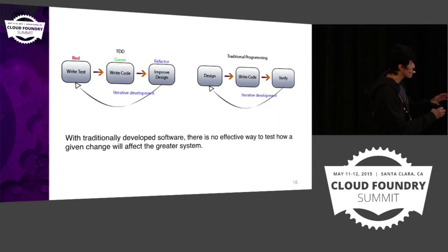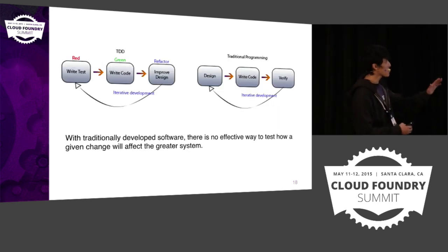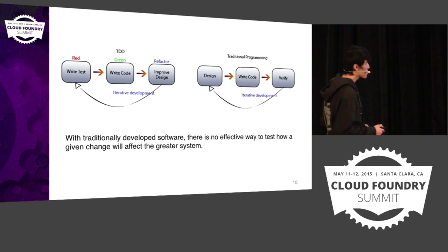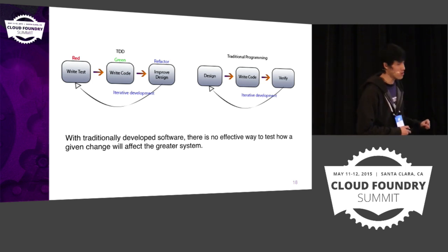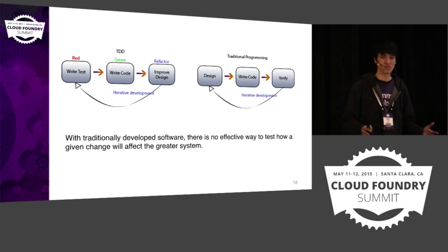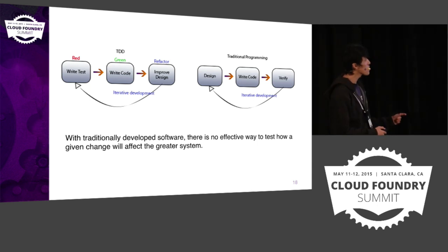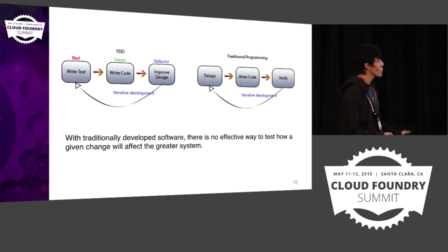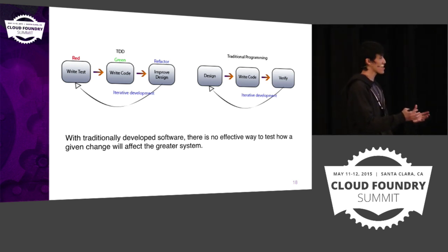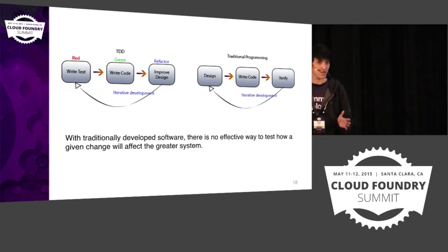Here's a graph to illustrate TDD versus traditional programming. On the left, in TDD, the very first step is to write a test — not the code. The test won't pass because there's no code yet, so you write code to make the test pass, then refactor as needed while keeping the test passing — and you repeat this cycle many times in an hour. In traditional programming, you design what you want, write the code, and then go back and verify whether it's working.